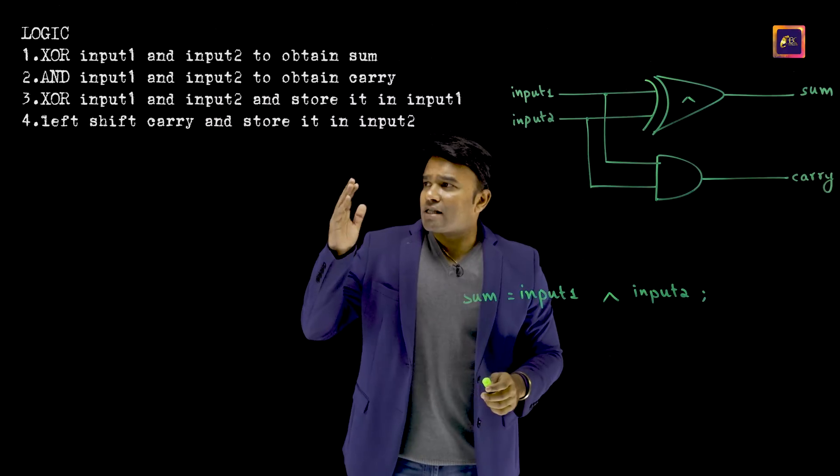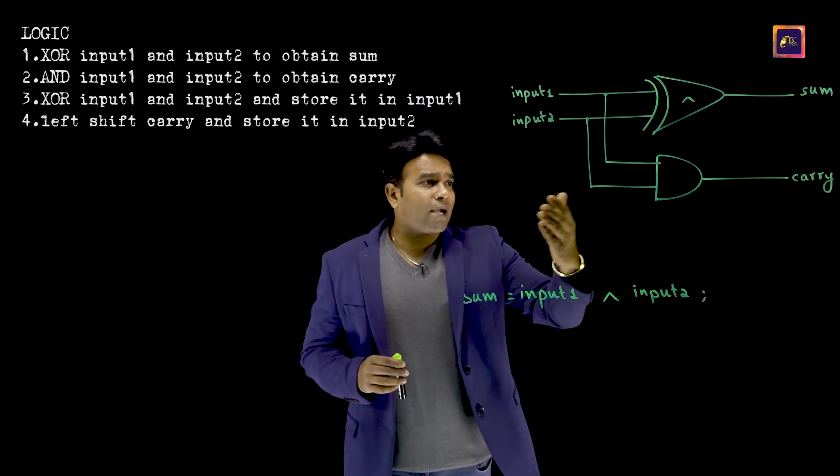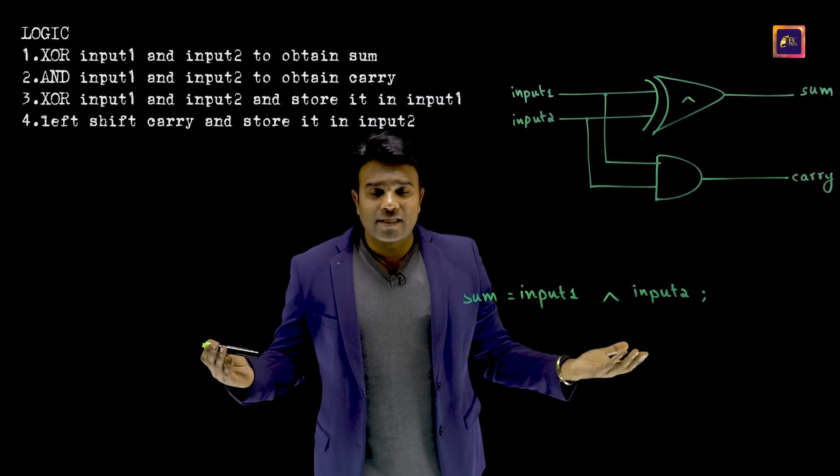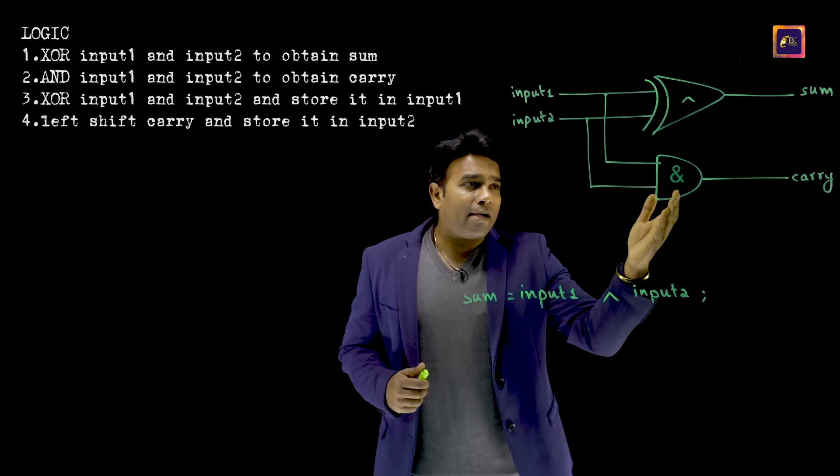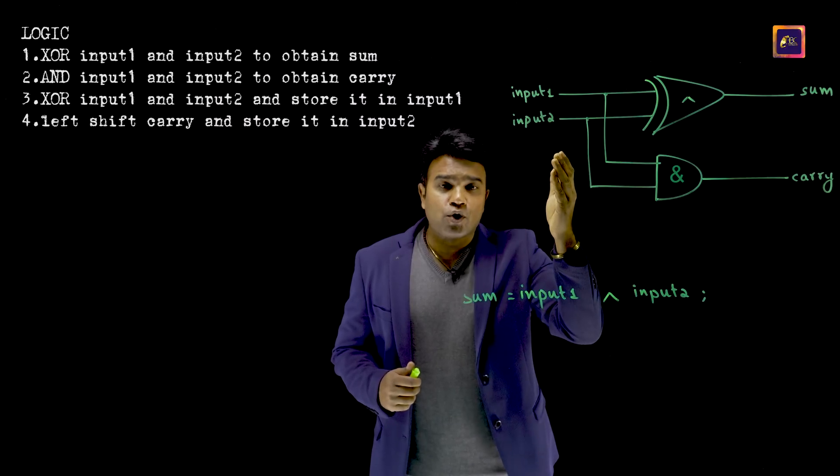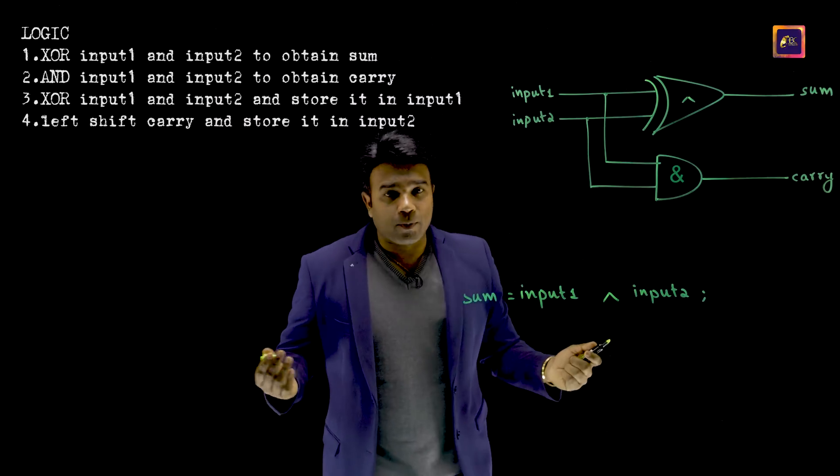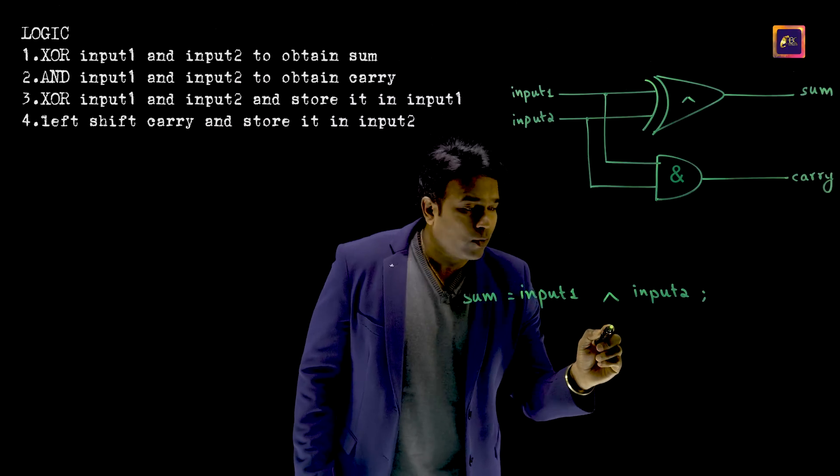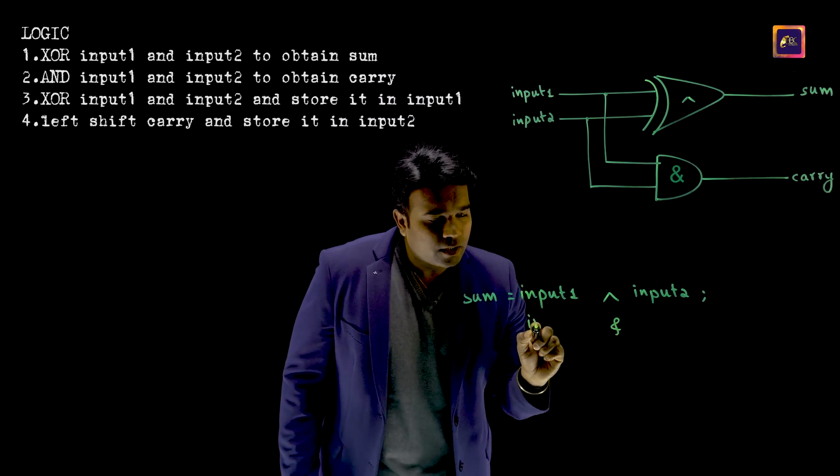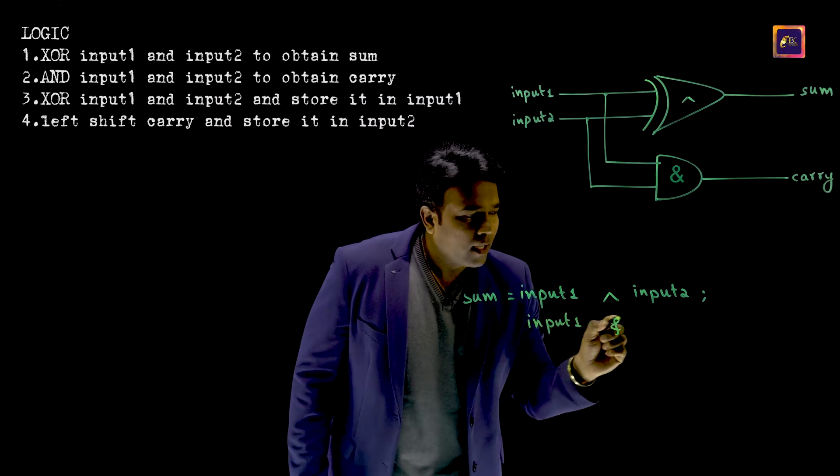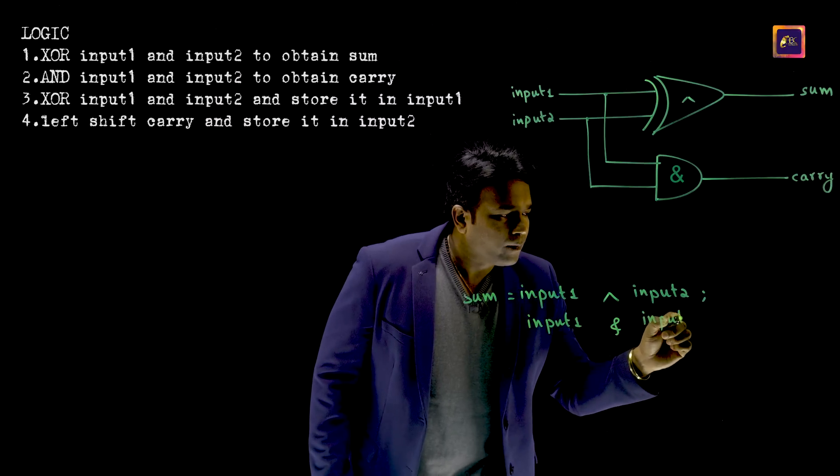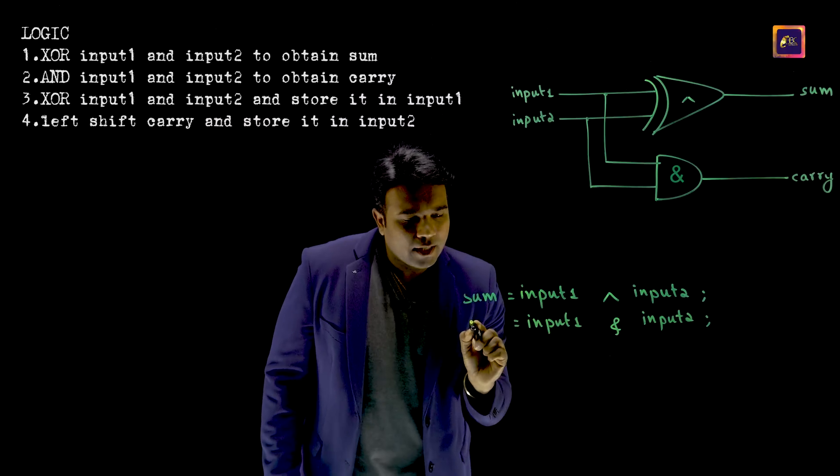Similarly, the second step of the logic and the second part of the circuit both mean the same, that I am supposed to AND input 1 and input 2 and obtain the carry. And in a programming language, this is the way we do it, that I would AND input 1 and input 2 and I am going to obtain the carry.